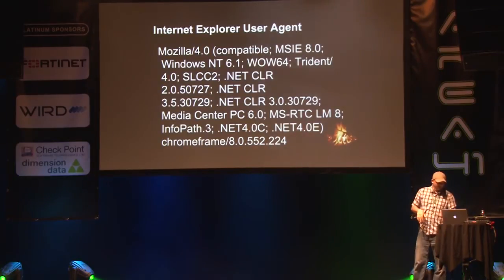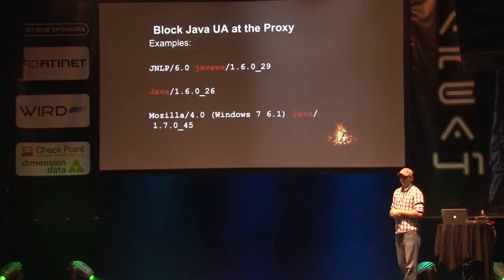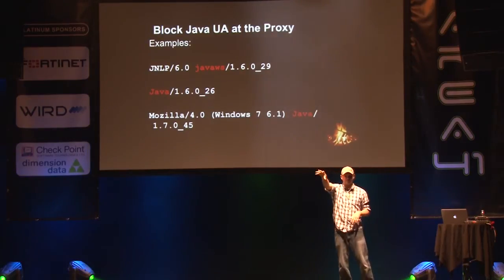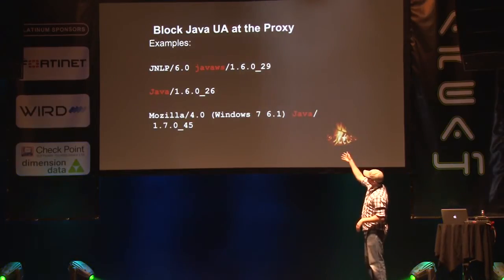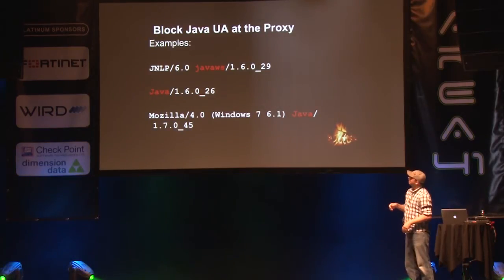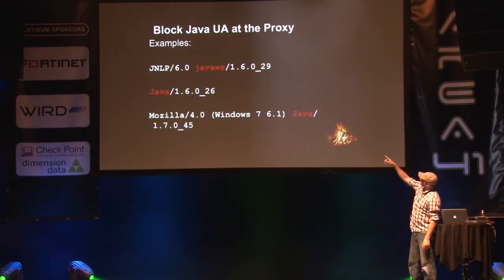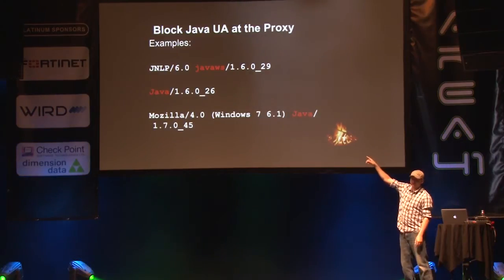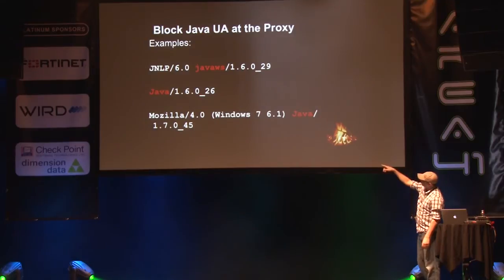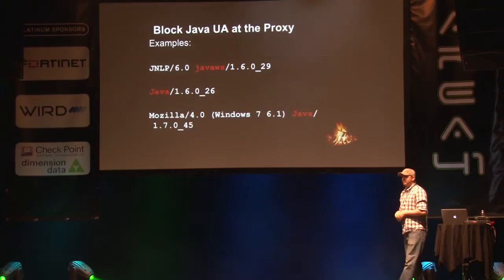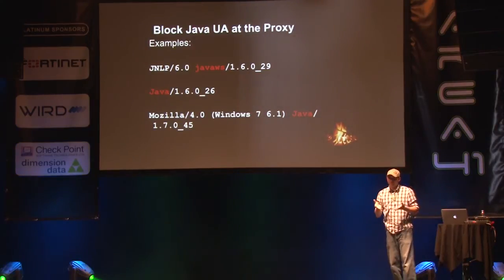The browser says: I don't know how to do anything with this — here Java plugin, you do it. That Java plugin sends a request across, but it sends it with a user agent that's way different than what the browser uses: something like 'Java_WS 1.6.0_29.' Anyone know what exploit works for that? How about 1.6.0_26? How about 1.7.0_45?